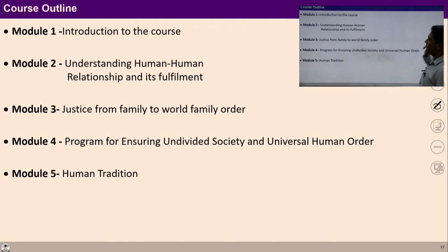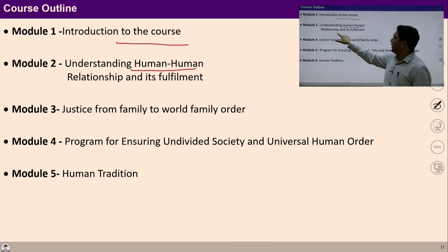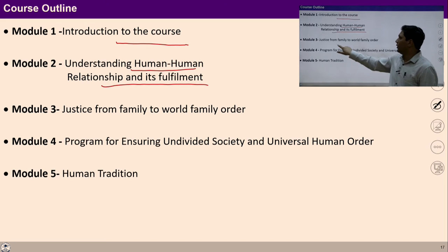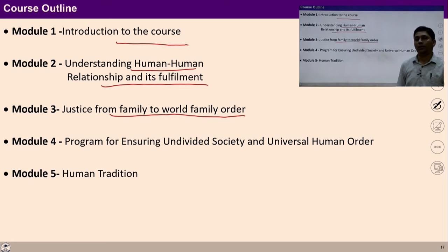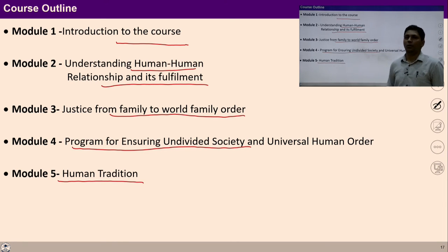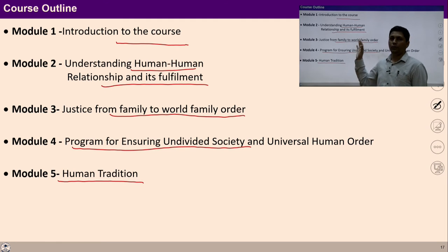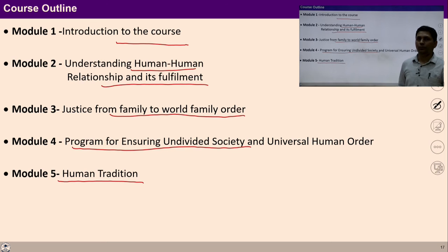Now we can discuss the outline of this course. There are 5 modules in the whole course. In module 1, we are going to introduce the course. In module 2, we will find out the detailing of relationship and its fulfillment. In module 3, we will see the expansion of justice from family to world family order. In module 4, we will find out the program for ensuring undivided society and universal order. In module 5, we will study some efforts made in the past and see human tradition in detail.